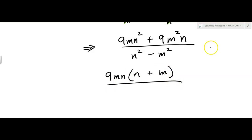And then in the denominator, I try to factor that. That's the difference of squares. So it's going to be N plus M times N minus M. And now for another exciting moment, we get to cancel the N plus M factor.